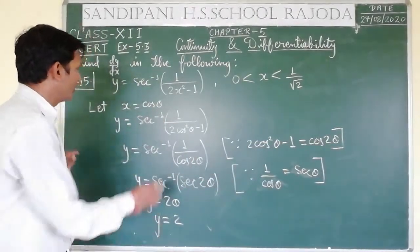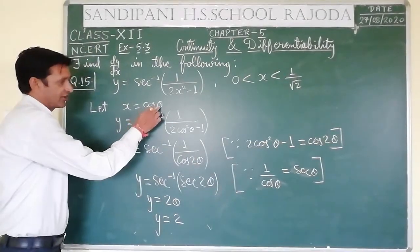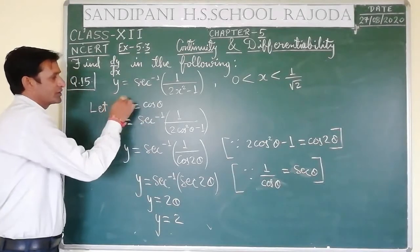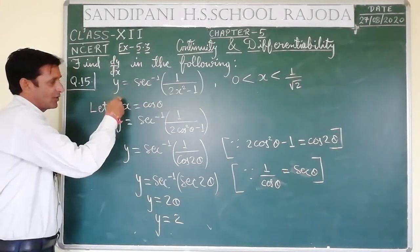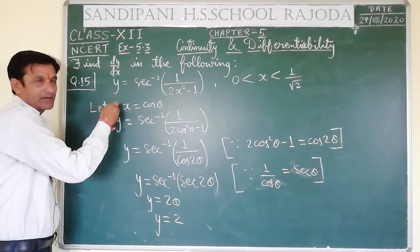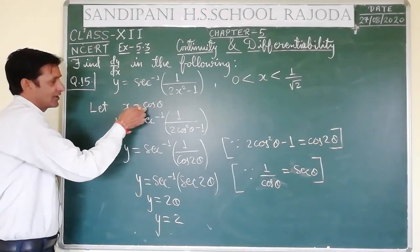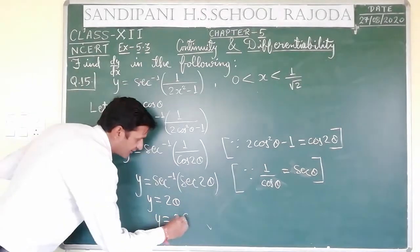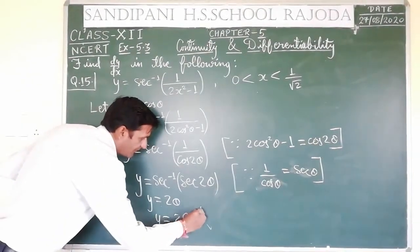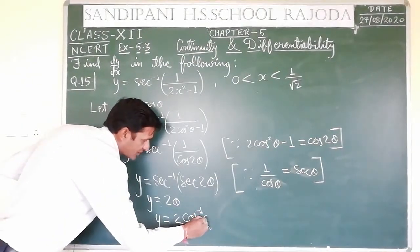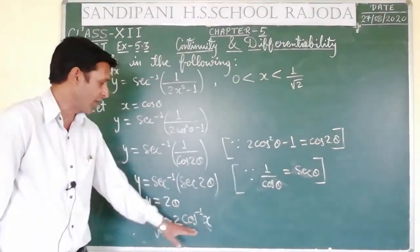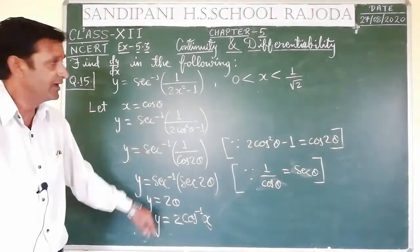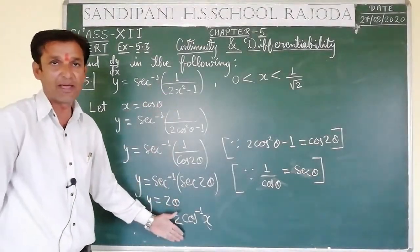According to our consideration, theta = cos⁻¹ x, because when cos is shifted from RHS to LHS it becomes cos inverse. So theta = cos⁻¹ x, and it becomes y = 2 cos⁻¹ x. Now 2 cos⁻¹ x can be differentiated with respect to x because now basically it is the function of x only in a very simplified manner.